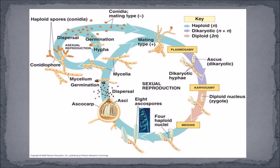Like zygomycetes, ascomycetes can reproduce both sexually and asexually. Asexually, small spores called conidia are formed at the ends of special hyphae called conidiophores. If a spore lands in a suitable environment, it grows into a haploid mycelium. In sexual reproduction, two different mating types combine and form an ascus, which are reproductive structures that contain spores called ascospores, which can be released to grow into new organisms.